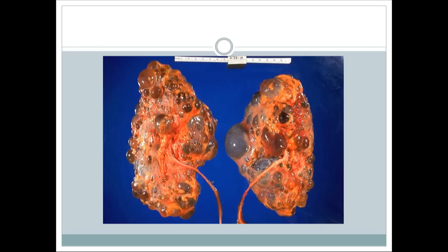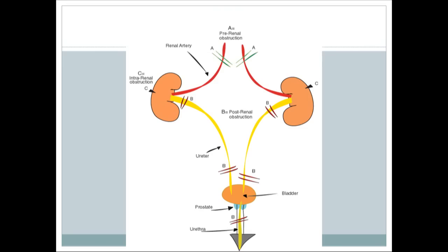In the autosomal dominant form, patients are adults and can also have berry aneurysms in their Circle of Willis. This is a very important association to remember.